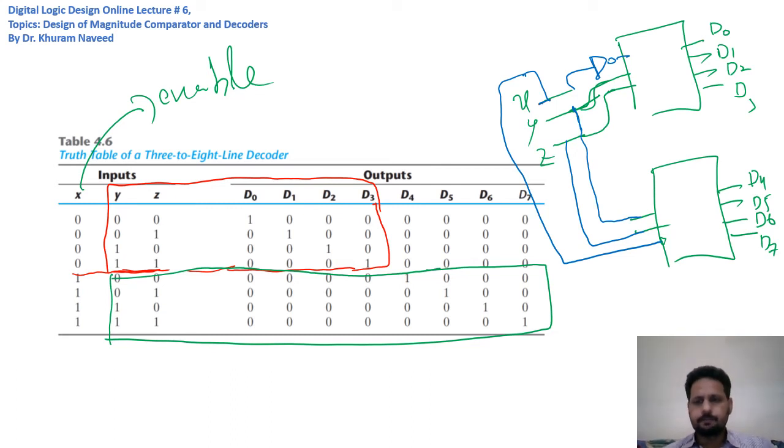So, a two-to-four line decoder, same as the case here. The circuit inside this box would be this one.